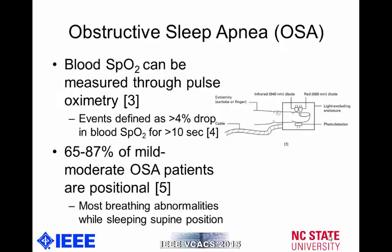An additional factor we found during research was that 65% to 87% of mild to moderate obstructive sleep apnea patients have their symptoms based on their sleeping position. Particularly, if the patient is sleeping on their back in the supine position, their airways are more likely to collapse and thus block oxygen flow. This makes sense as gravity is now acting on those soft tissues, forcing them to close.